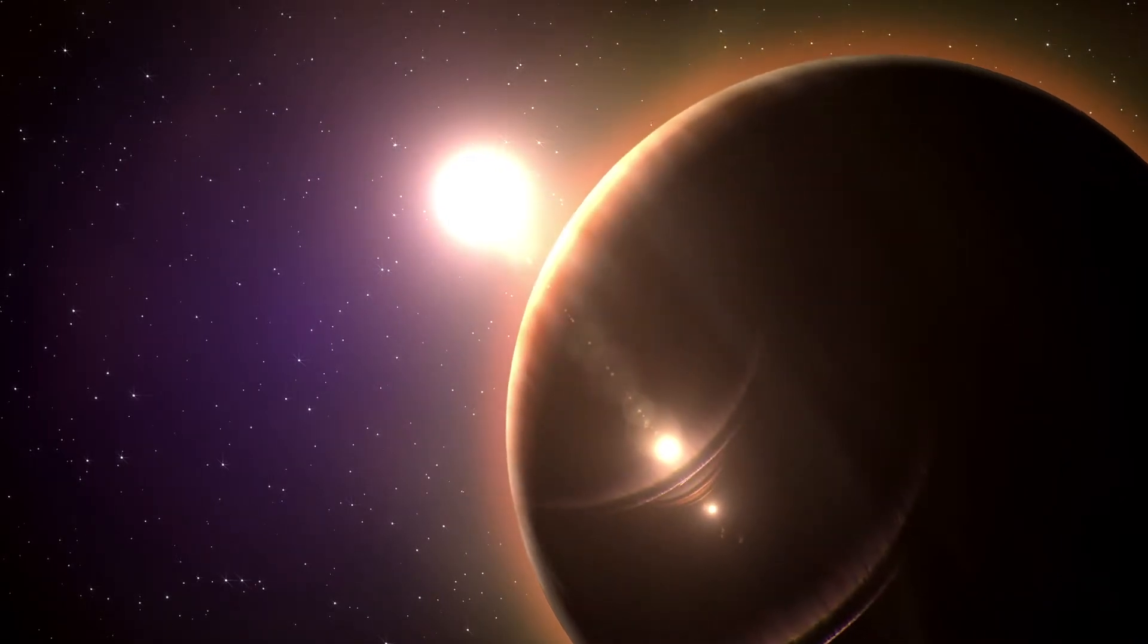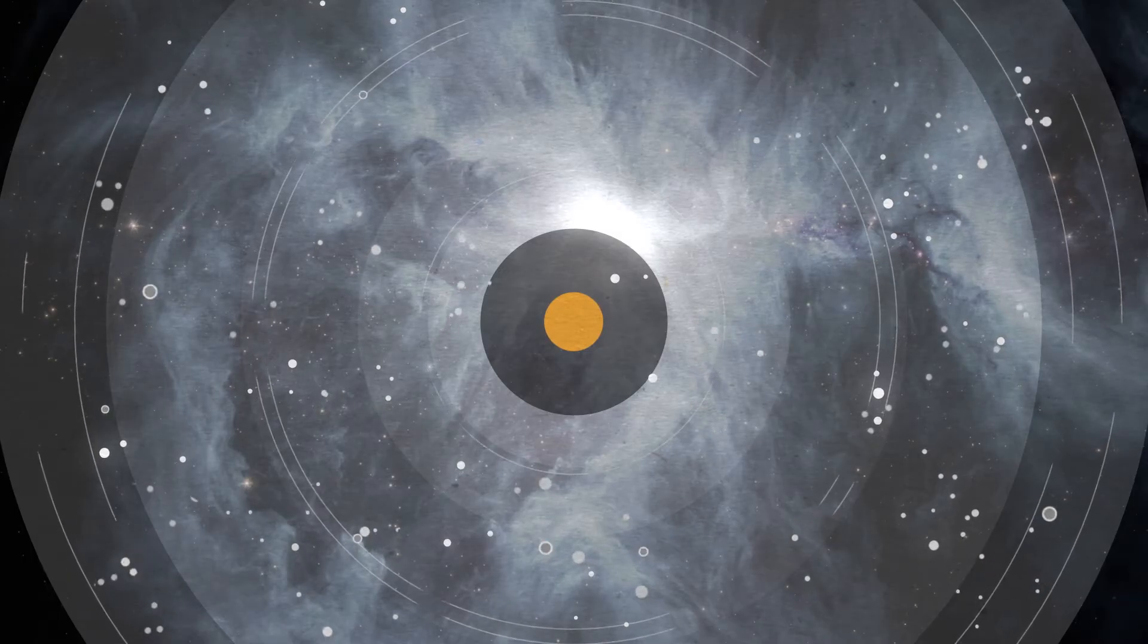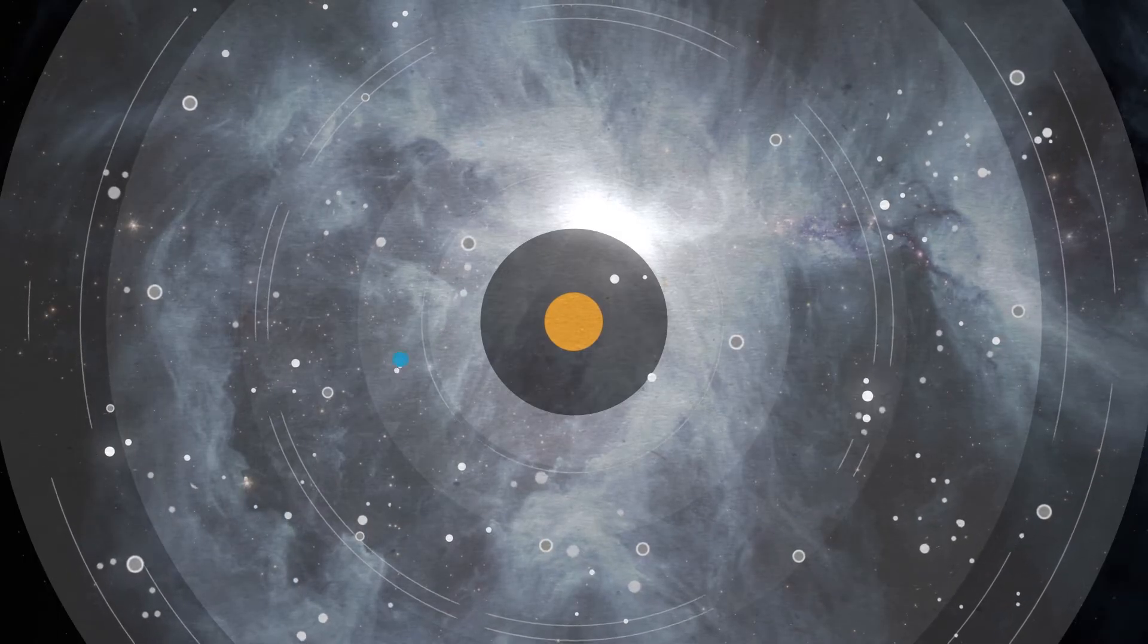Over hundreds of millions of years, the remaining material clumped together, forming comets, asteroids and, eventually, planets.